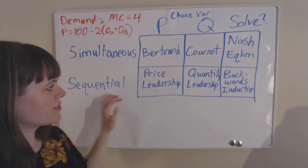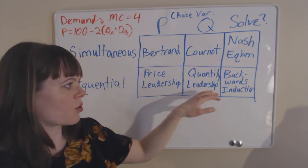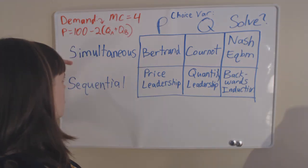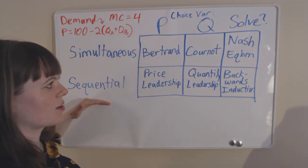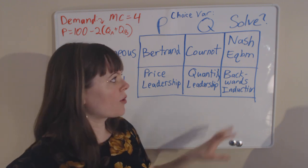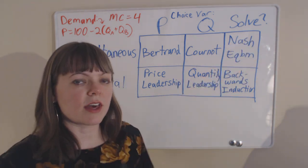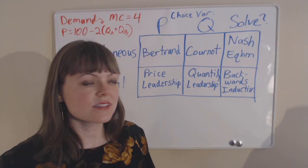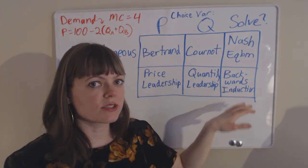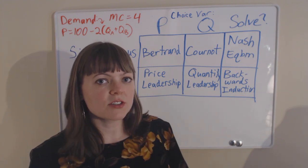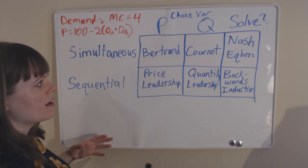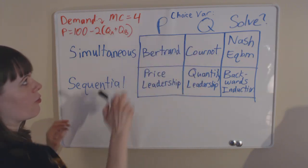The sequential moves games are just called price leadership and quantity leadership oligopolies. We use game theory principles that's associated with simultaneous moves and sequential moves. In game theory when we have a simultaneous moves game, we're going to use Nash equilibrium through a best response analysis. If it's a sequential moves game, we're going to employ backwards induction.